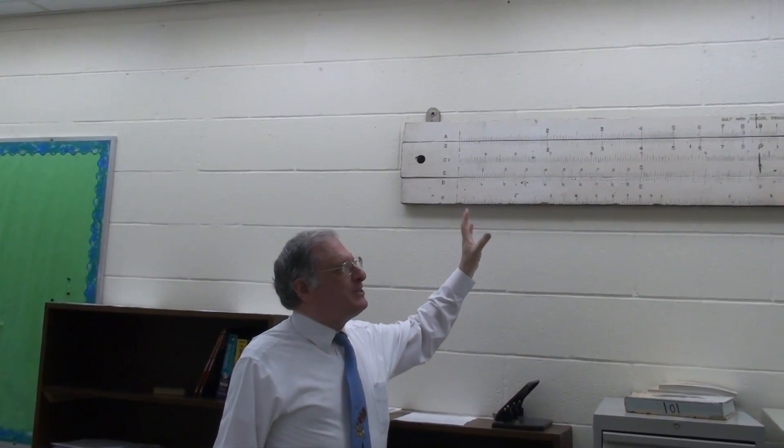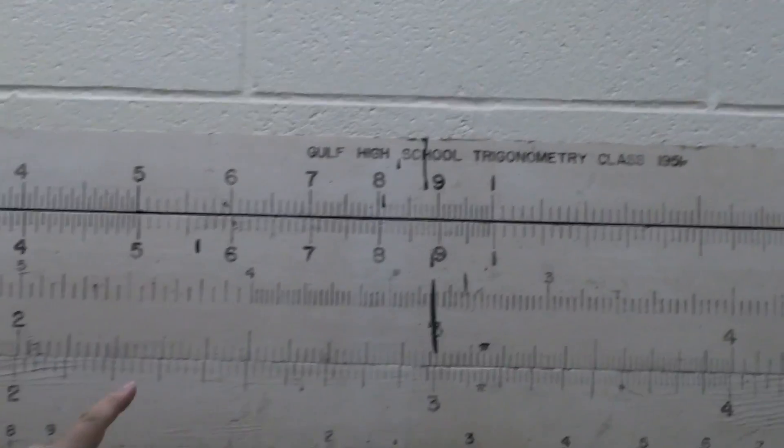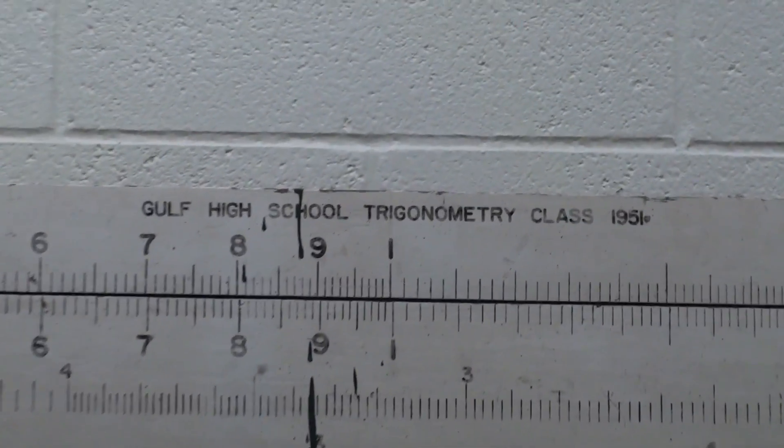This is a giant slide rule used at Gulf High School in 1951 before they had calculators. If you notice, it says up there, Gulf High School Trigonometry Class, 1951.